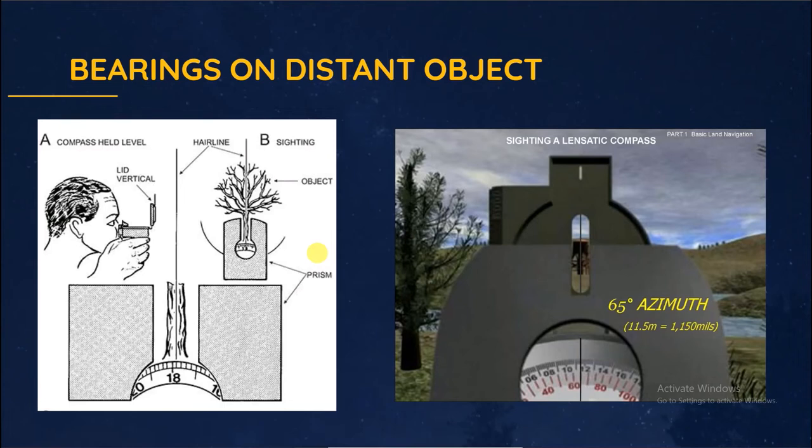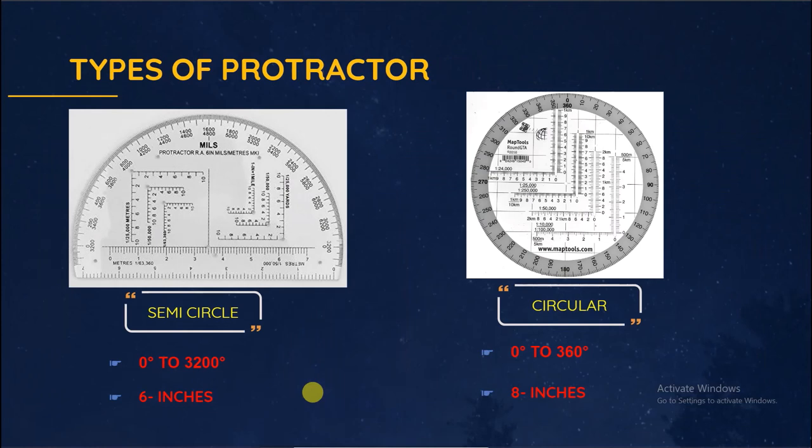Now we take readings. Three types of service protractors are there: semicircular protractor, circular protractor, rectangular protractor mark III.